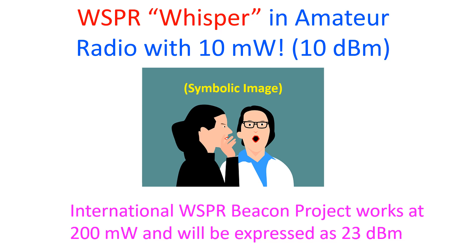A WSPR station of 10 milliwatts has been received at 1100 km on 7 MHz — this would be a power of 10dBm. WSPR is pronounced 'whisper' and stands for Weak Signal Propagation Reporter, software for weak signal communication by radio amateurs. It was initially written by Joe Taylor, K1JT.